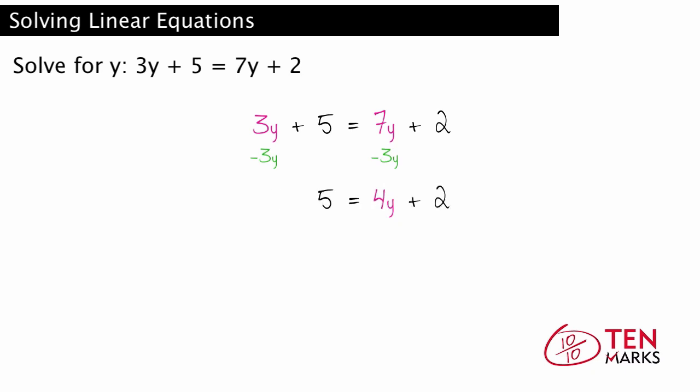Now you have only one y term, which looks much more familiar. Now subtract 2 from both sides to undo the addition to 4y. 2 minus 2 is 0, so you can leave it off. And you are left with 3 equals 4y.